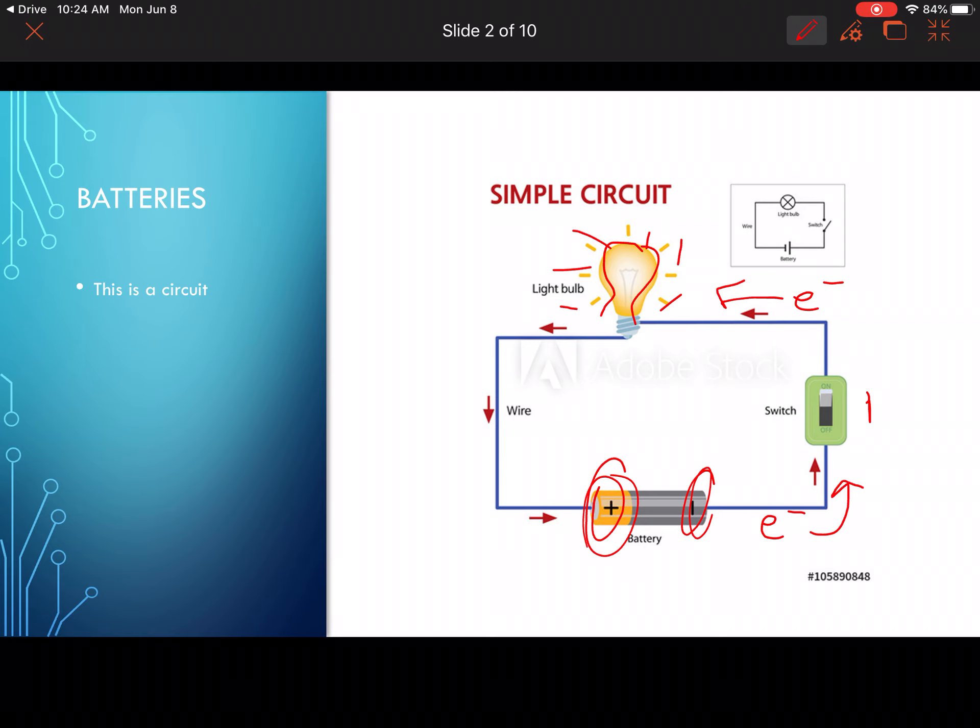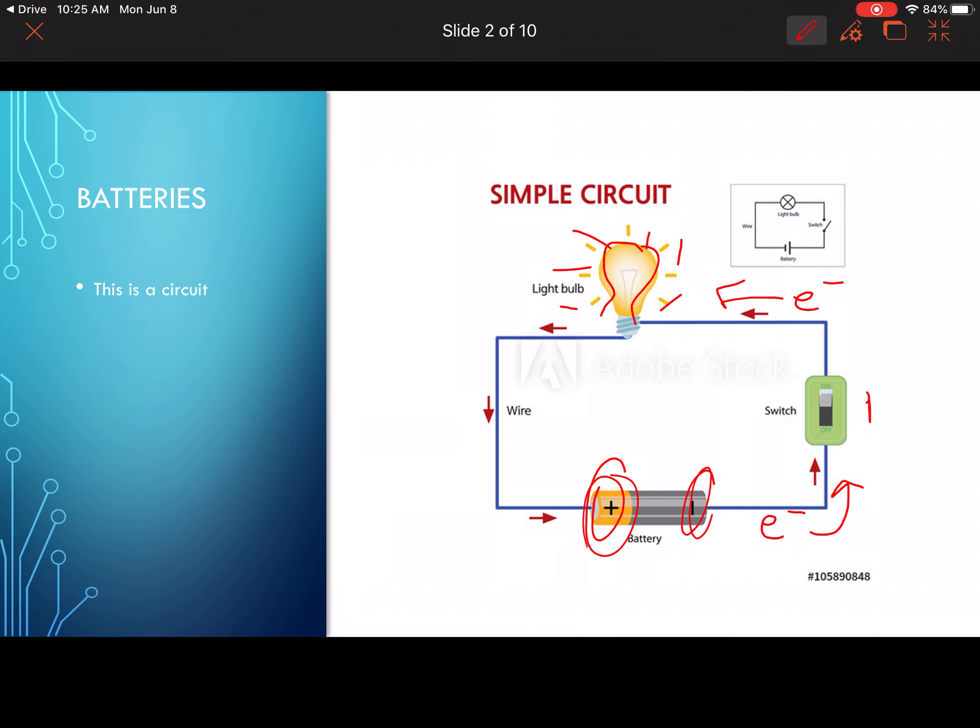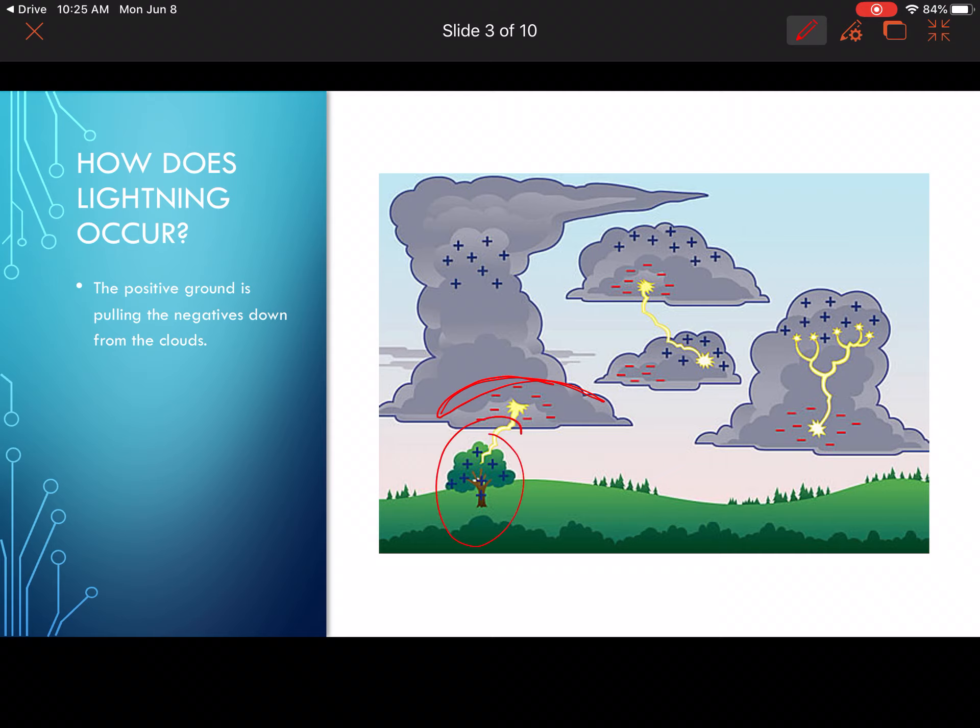We'll talk more about this in a minute. Now we're going to relate this to lightning. I want you to do a little sketch here of lightning as well. The positive ground is pulling the negatives down from the clouds, so we've got the negatives here and that positive tree here - the high point on the ground is yanking those electrons down from the sky. Much the same as the circuit, right? This positive here is pulling the electrons; the positive here is pulling the electrons.